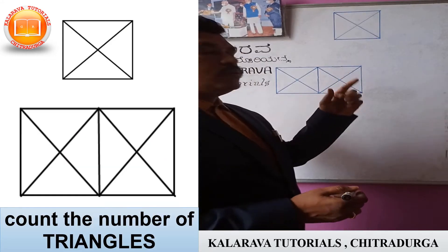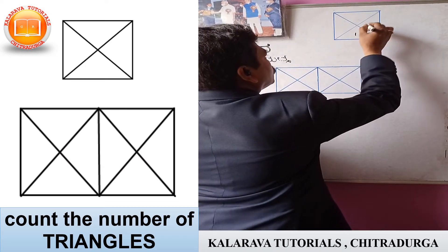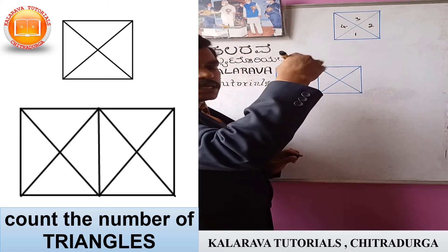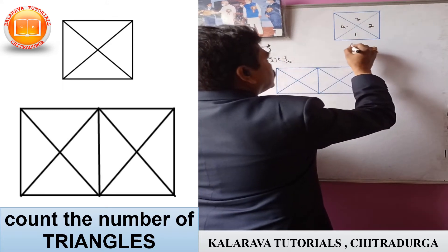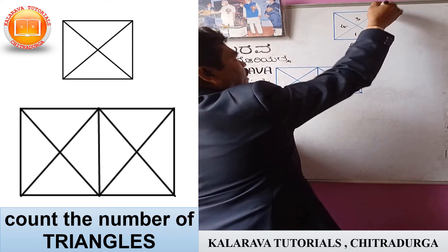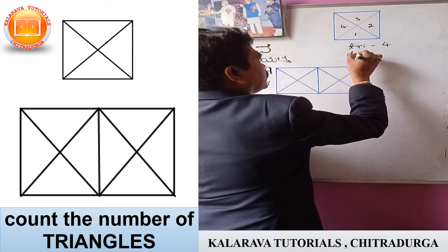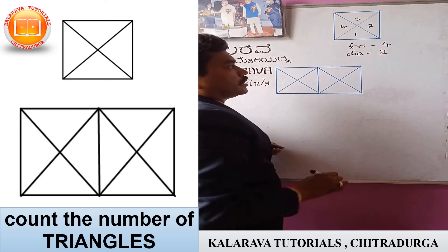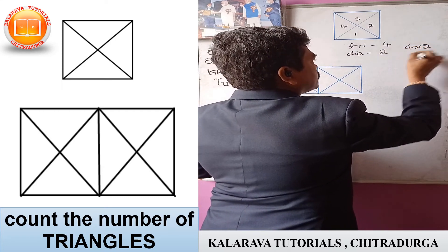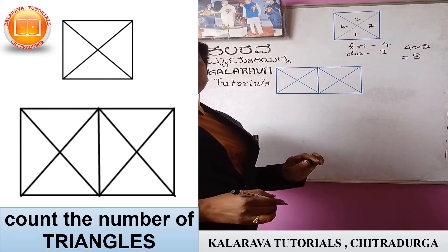Here we have to find out the number of triangles in this diagram. We count: 1, 2, 3, 4 triangles inside. And the diagonals — there are 2 diagonals. Therefore, the total number of triangles is 4 into 2, that is 8 triangles in this diagram.